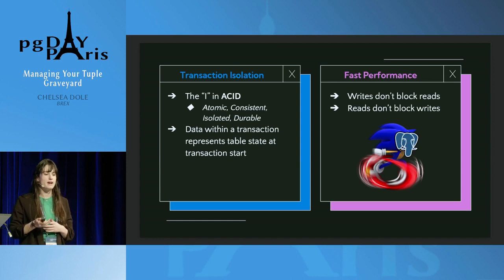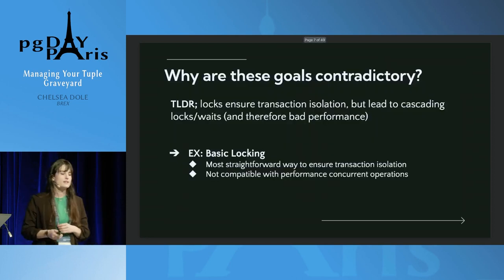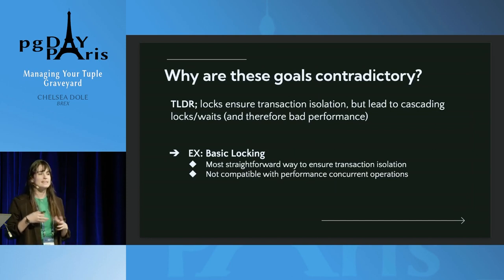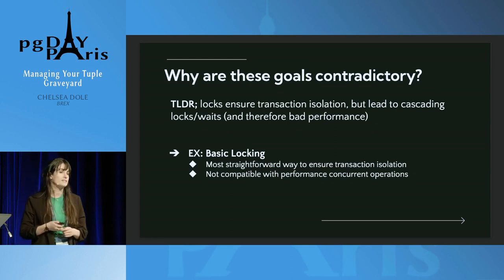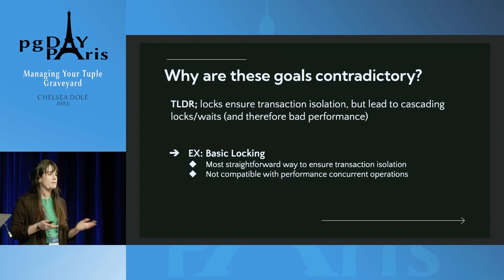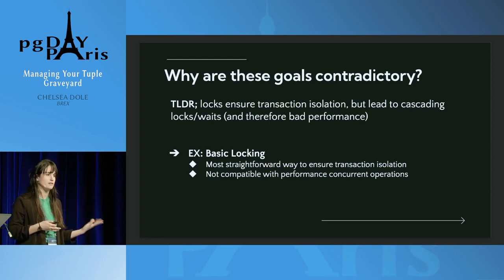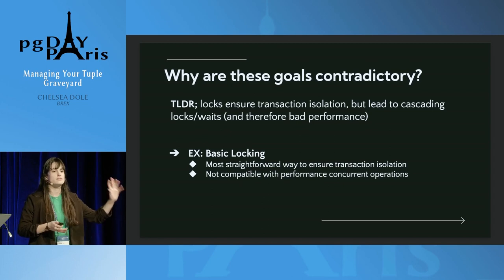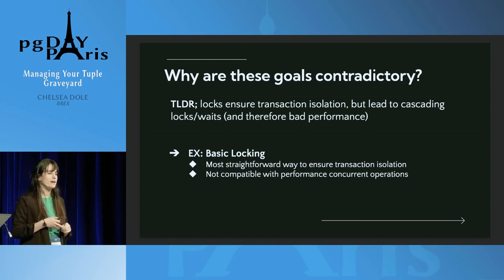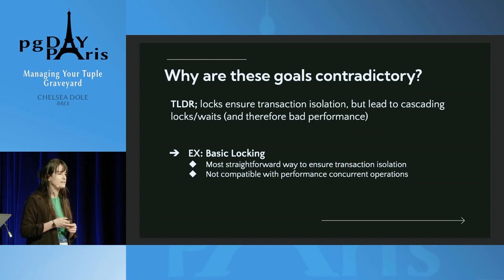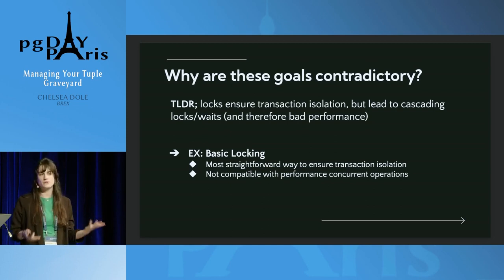The other key element MVCC provides is fast performance. Fast performance is typically defined as writes not blocking reads, or rarely, and reads not blocking writes. These two goals are contradictory because transaction isolation can lead to cascading locks and waits, and by extension potentially bad performance. If you have a single write lock, one session updates some data, relinquishes the lock, and allows another session to do the same — it's inherently a single-threaded process. The idea of concurrency control can't be in the mix whatsoever.